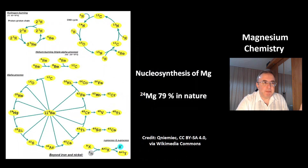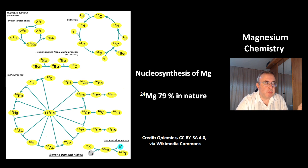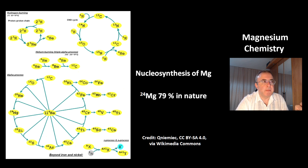This is a picture of the nucleosynthesis of the lighter elements. At the top left, that's the proton-proton chain that makes the helium-4 isotope. Helium is the second most abundant element in the universe. At the top right, there's another process that also makes helium-4, a bit less efficiently.